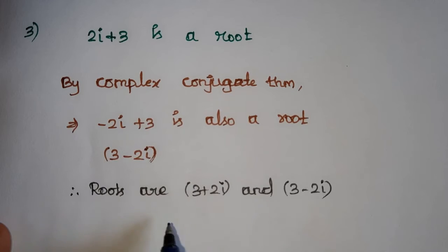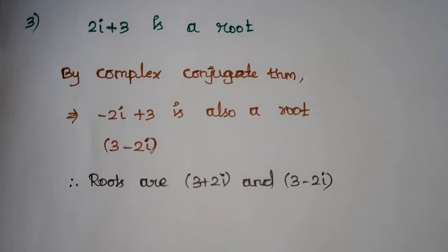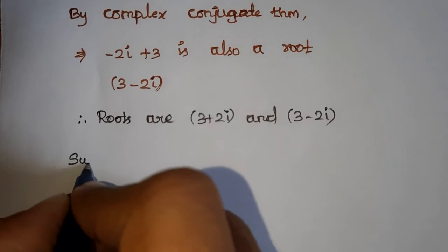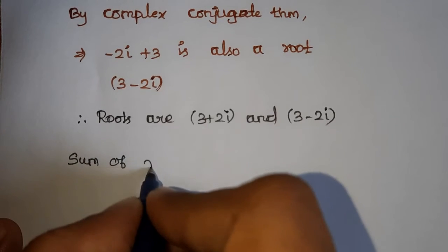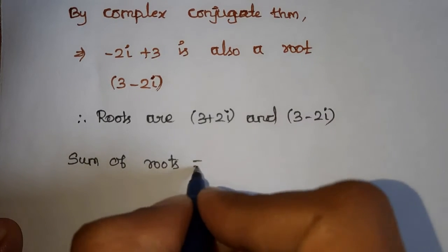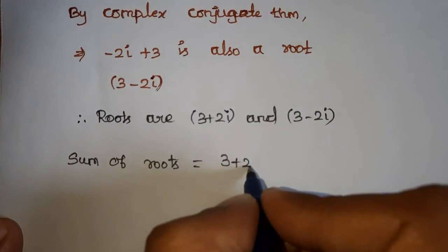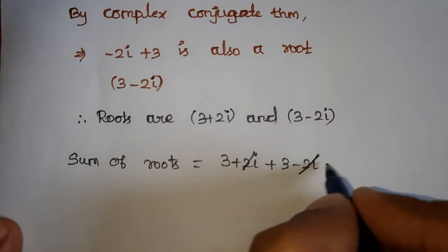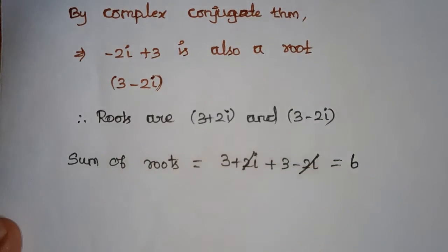Sum of roots: 3 plus 2i plus 3 minus 2i. 2i minus 2i cancel, 3 plus 3 equals 6.